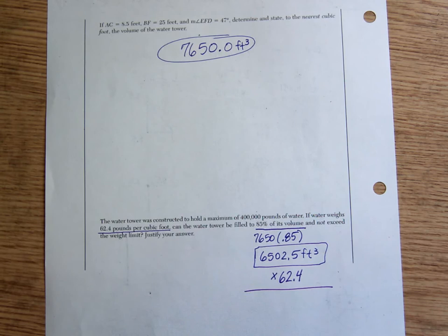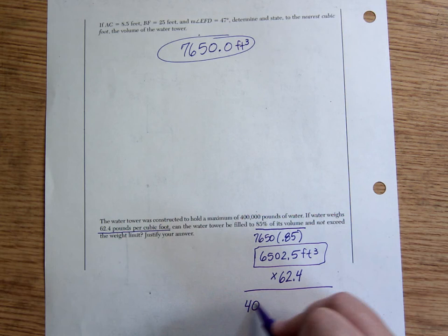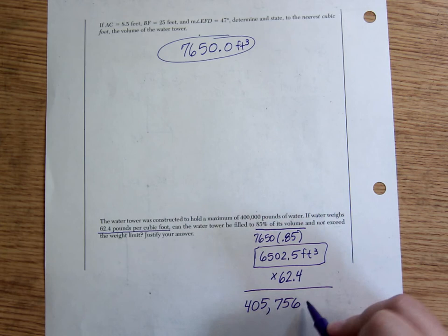So 6502.5 times 62.4. And this is the weight of the amount of water that would be in there if it is filled to 85% of its capacity. Now what did I do? I wrote cubic feet. Is that cubic feet? No. That's pounds.